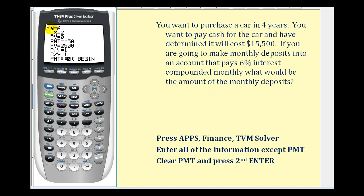Capital N represents the total number of payments that will be made. We're making monthly deposits for four years, so N would be twelve times four. The interest rate is six percent. The starting value, or present value, is zero. Let's skip the payments for right now. The future value we want to be fifteen thousand five hundred dollars.